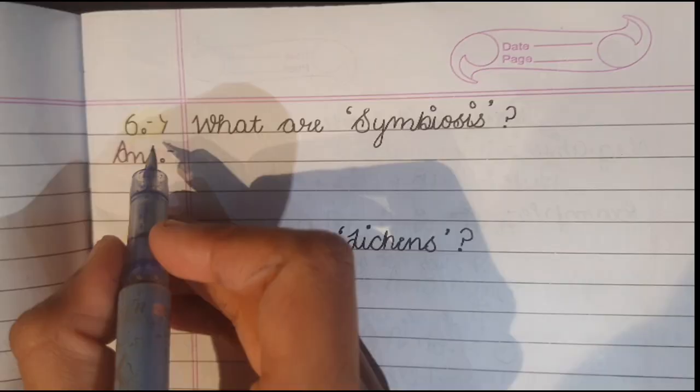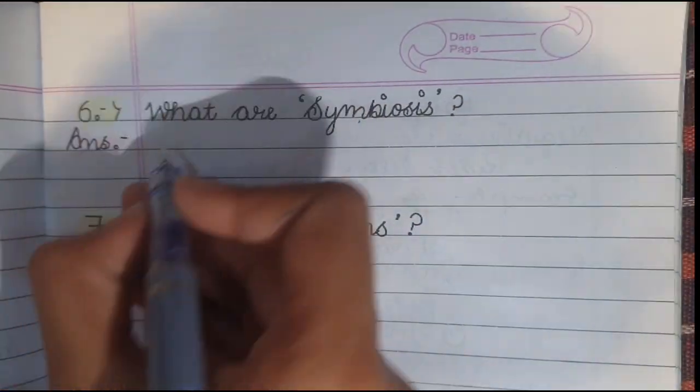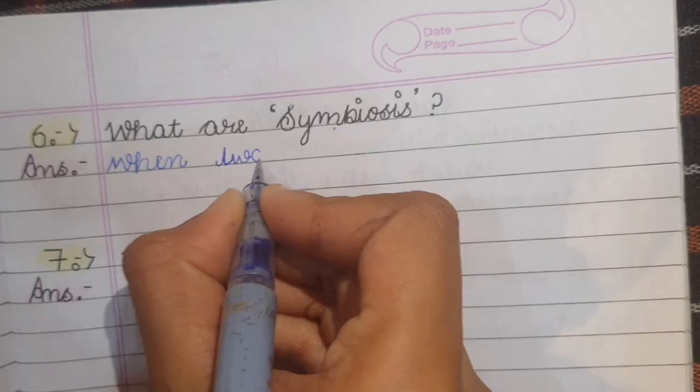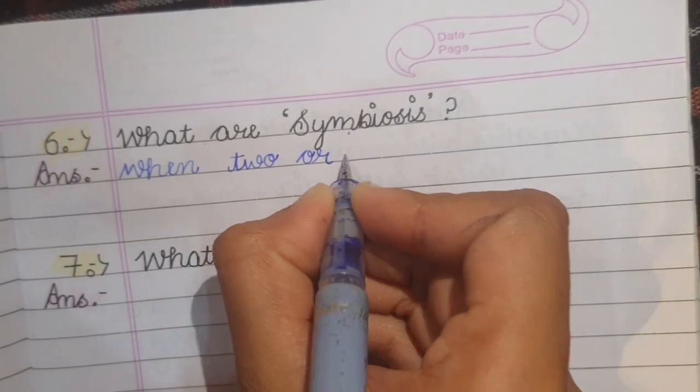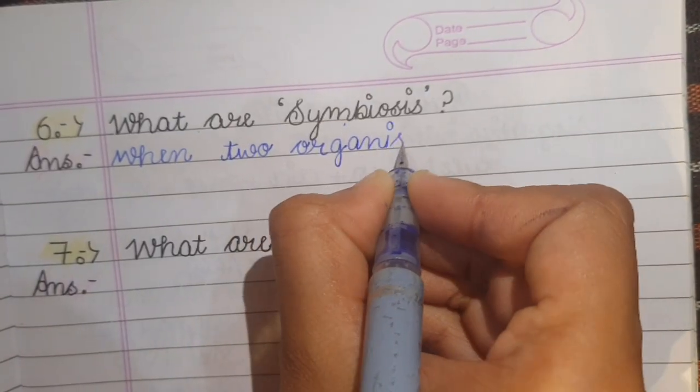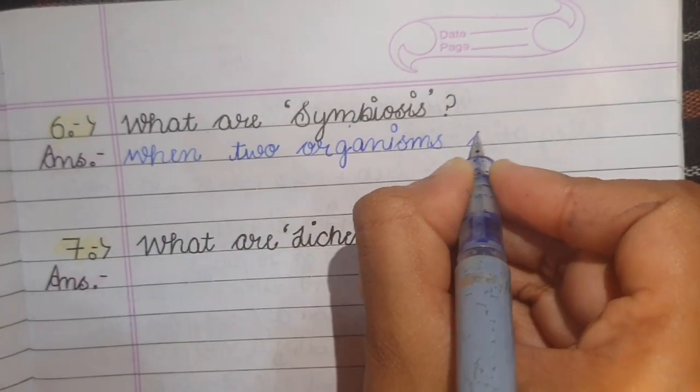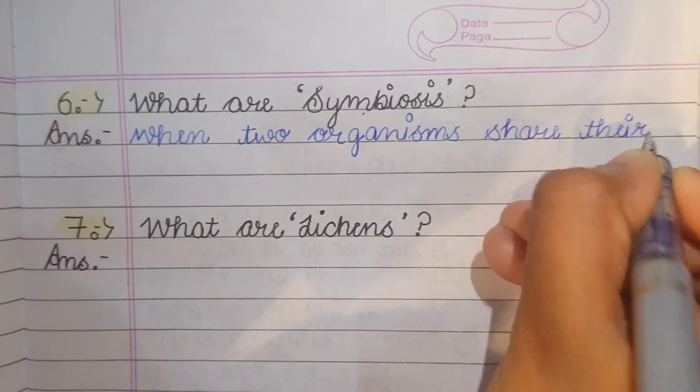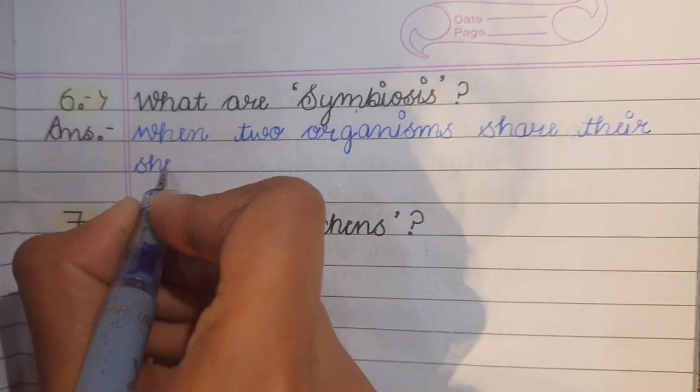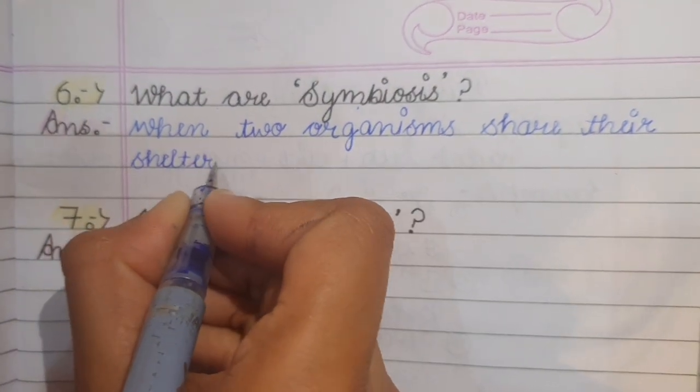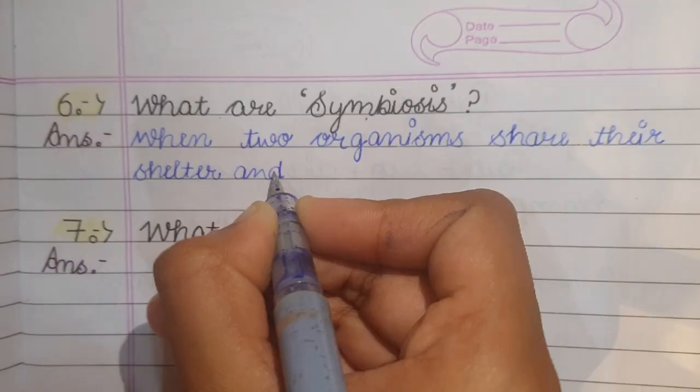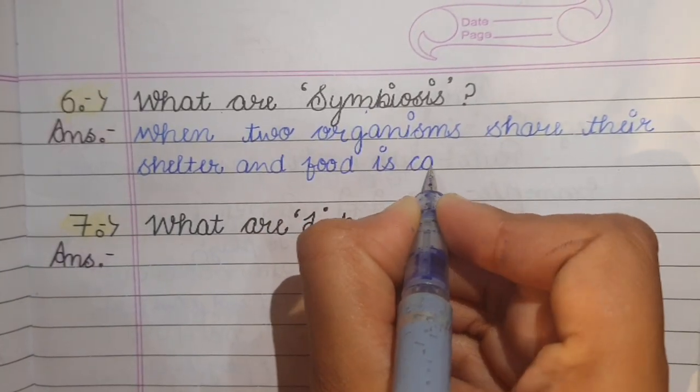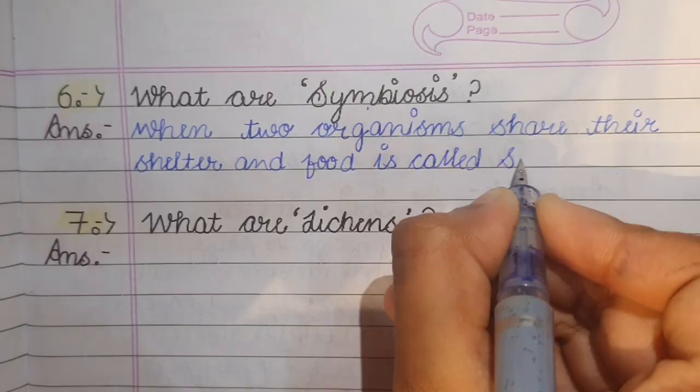Next question is what are symbiosis? Its answer is when two organisms share their shelter and food is called symbiosis.